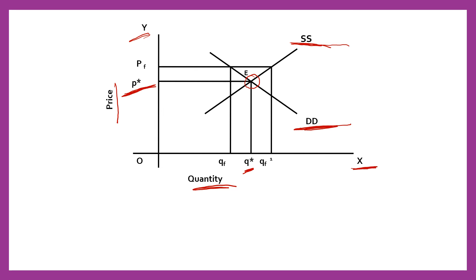At the equilibrium price P-star, few producers may not be able to recover their cost of production, so they may lose interest in producing such goods and services. In order to protect these producers, the government fixes a price above the equilibrium price — the price should not be less than this. That lower price limit, which is more than the equilibrium price, is the price floor; producers can sell at price floor or above it, but they cannot sell below price floor in the market.